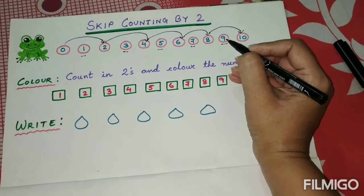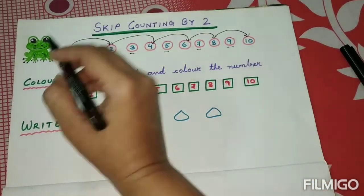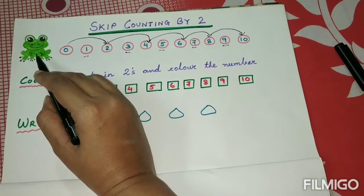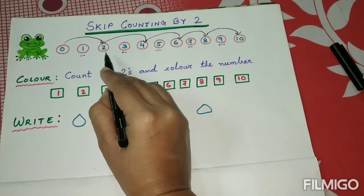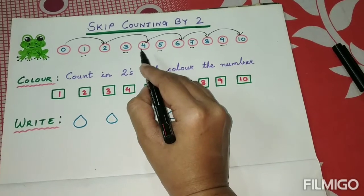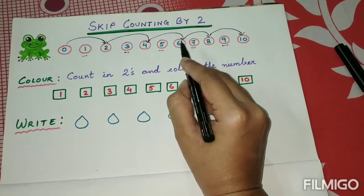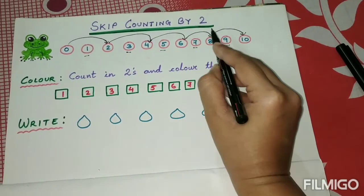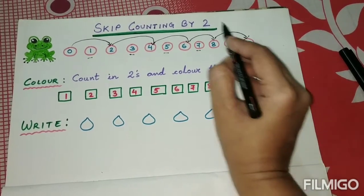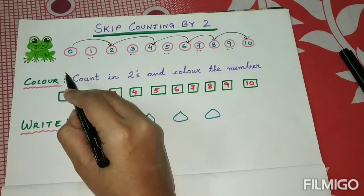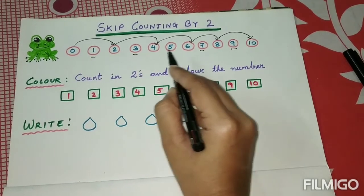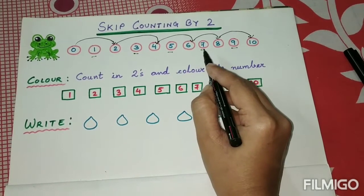From number eight we will jump and go to number ten, skipping number nine. So the frog jumps from zero to two, then two to four, then four to six, then six to eight, and eight to ten. The numbers one, three, five, seven, and nine we have skipped.